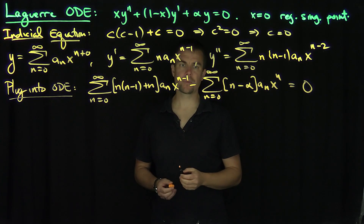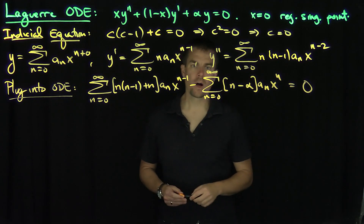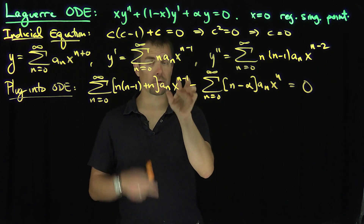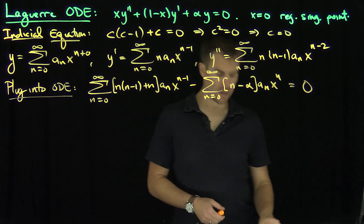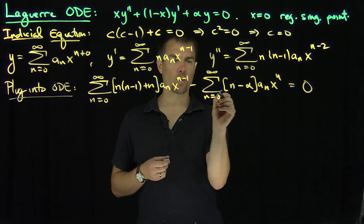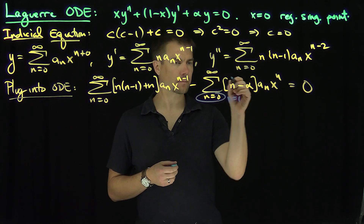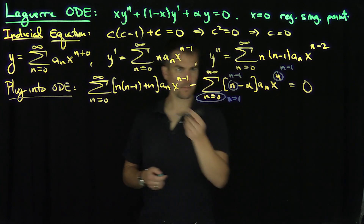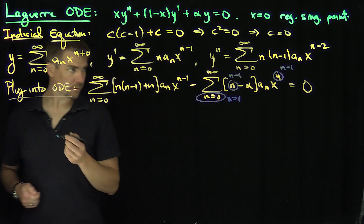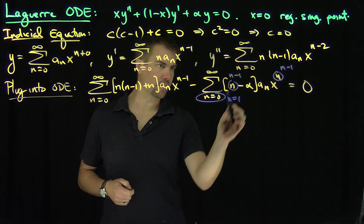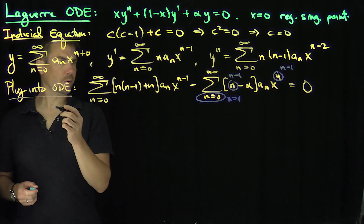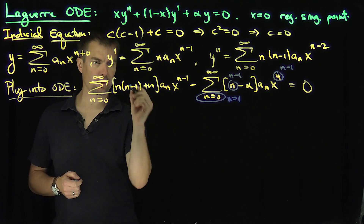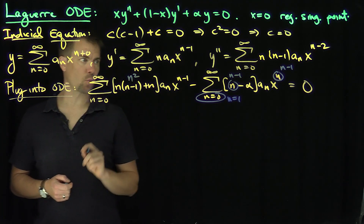That's the recursion relationship. The standard approach is to get every exponent to have n minus 1, the lowest exponent we see. We accomplish that by shifting the index: substituting n equals n plus 1 in the appropriate terms so that exponents align to n minus 1 throughout.